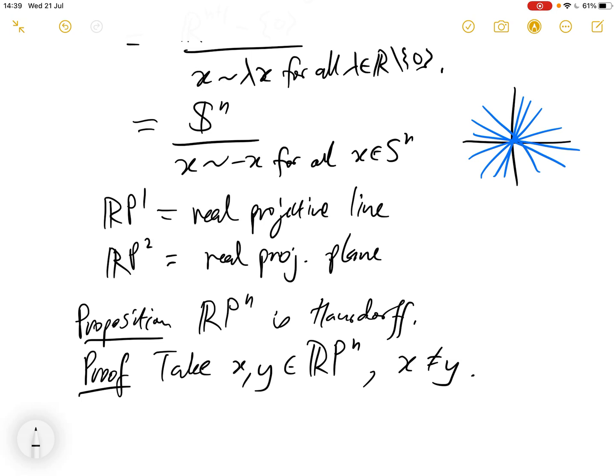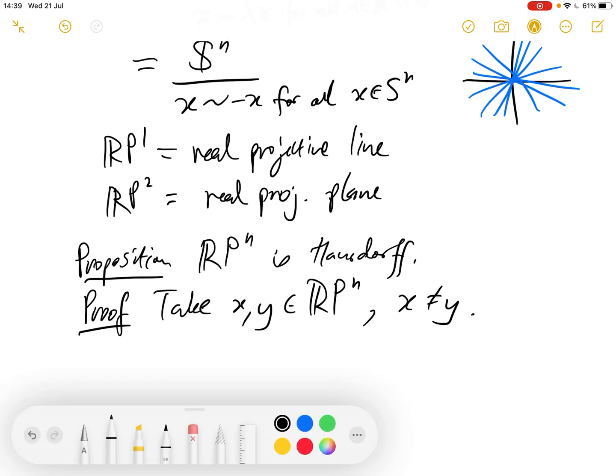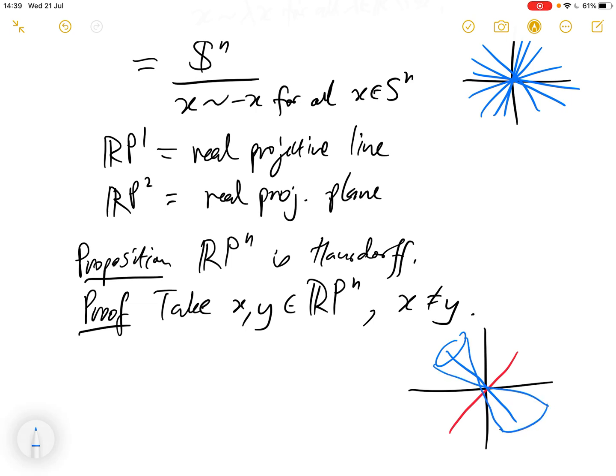And then each of these elements is really an equivalence class. It represents a line in Rm plus 1. So we can think of x and y as being lines. And then we can think, well, if we want to find distinct disjoint open sets around the two lines, so if we have two lines like this, well, we could imagine some sort of cone containing this line and another cone containing the red line.